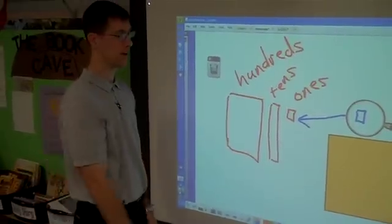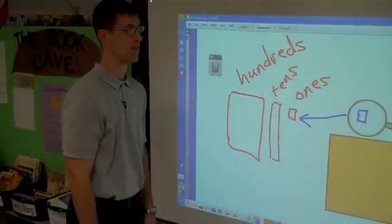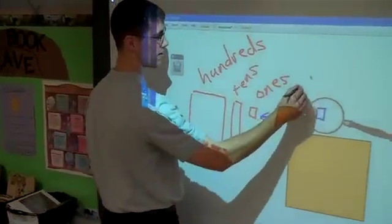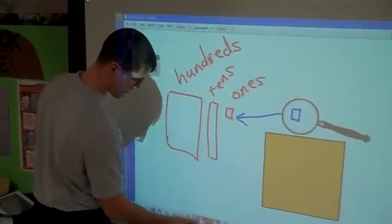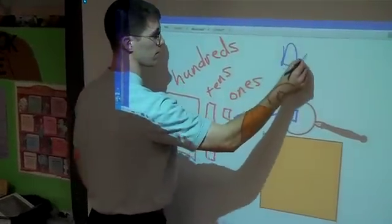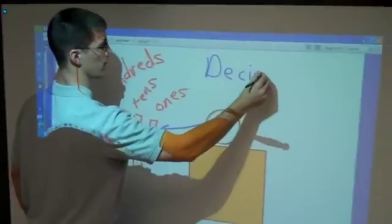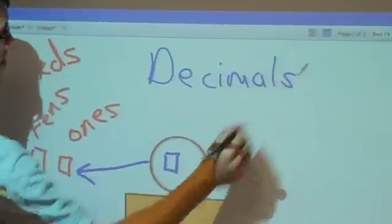But what happens when you get smaller than a one? Those are called decimals.